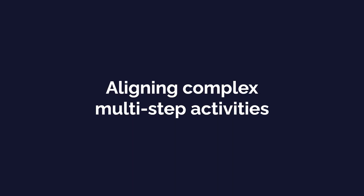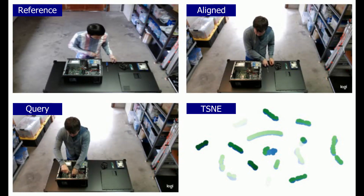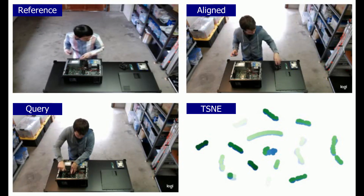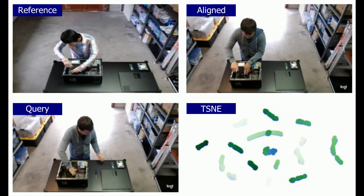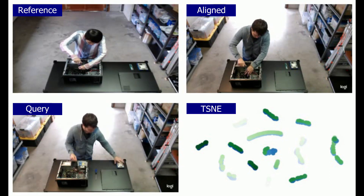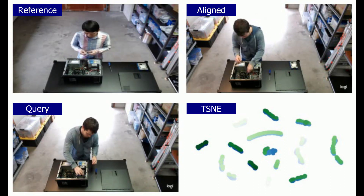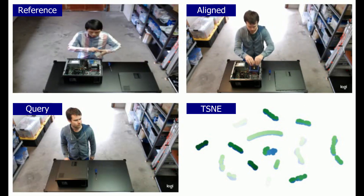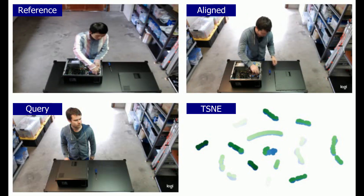We also show qualitative results from our in-house datasets of long, multi-step activities. In these demonstrations of assembling a desktop computer, notice how each step of the activity is aligned precisely among two different actors. We emphasize that no labels were used for training these models. In the TSNE visualization, note that frames of corresponding steps lie close to each other in the embedding space, indicating that the learned embedding function is laying out the space according to subtle changes in human and object poses.